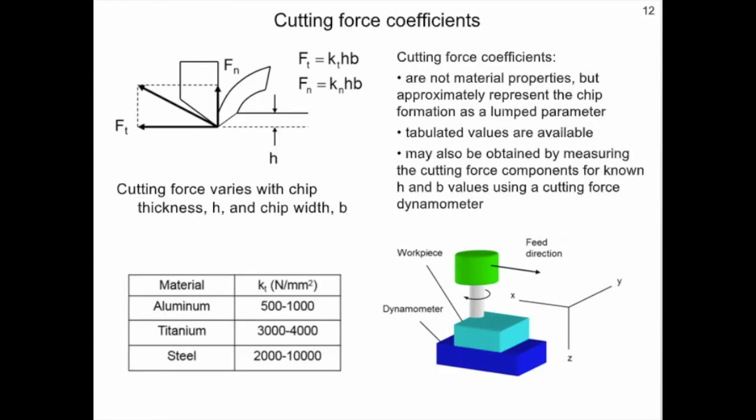We also require the force model in order to develop a stability lobe diagram. This force model is described in terms of cutting force coefficients. Some important notes about cutting force coefficients is that they are not material properties, but rather approximately represent the chip formation as a lumped parameter. Also, tabulated values are generally available. Finally, cutting force coefficients may be determined experimentally by measuring the cutting force for known cutting conditions using a cutting force dynamometer. Some representative values of cutting force coefficients for common materials are shown in the table.